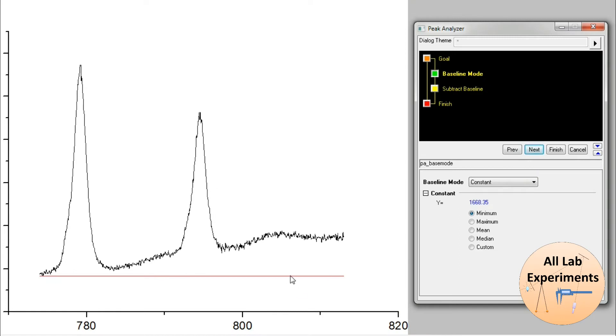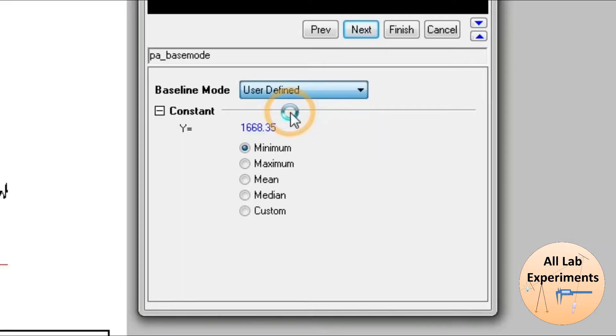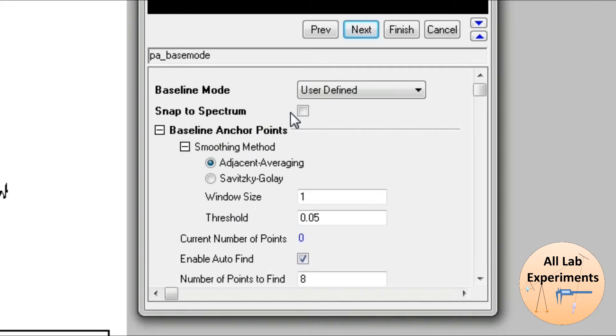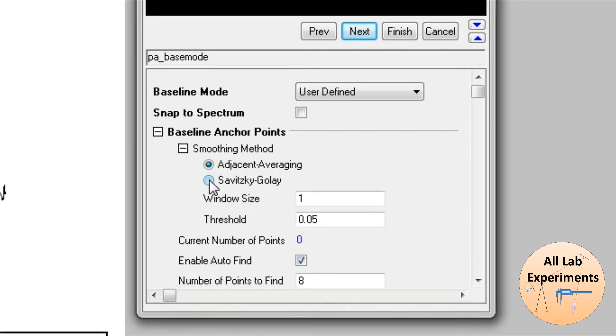It is showing a red line which is a constant, but we don't want it to be constant. We want it to be user-defined. So we select this, and after that you can select this option Savitzky-Golay option.